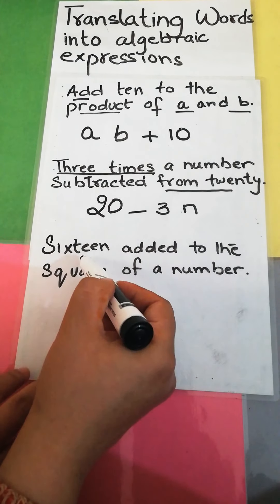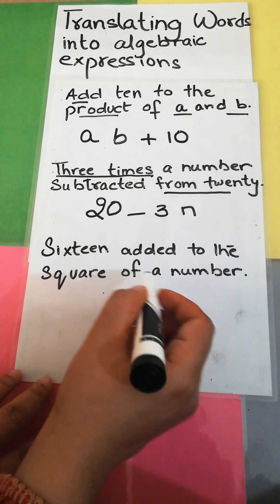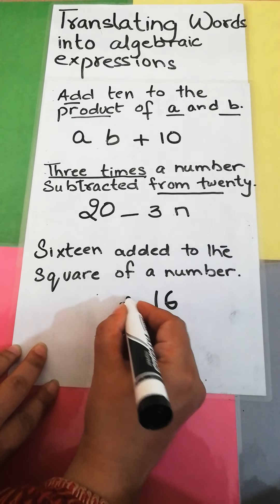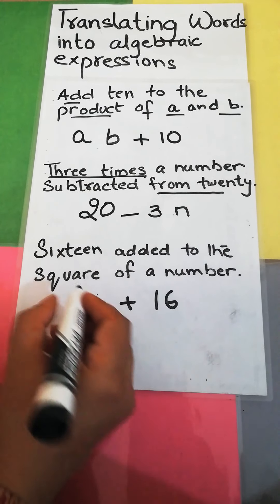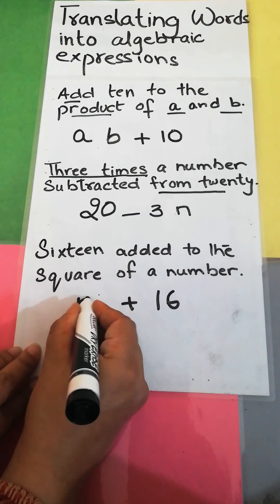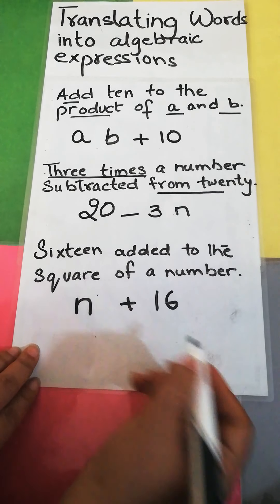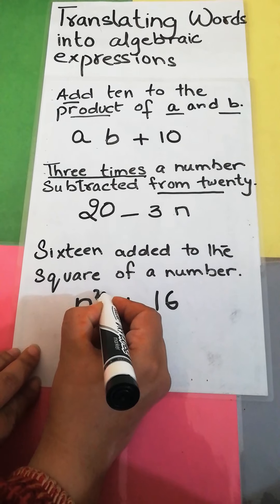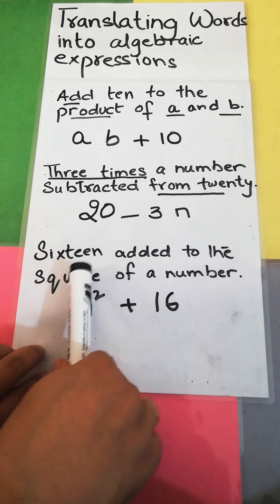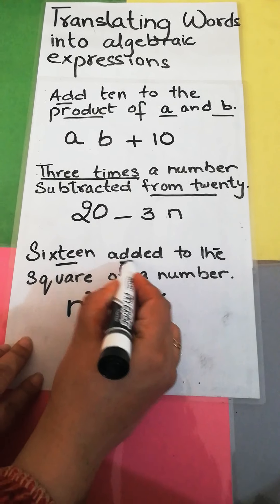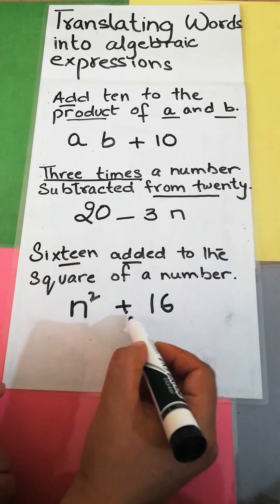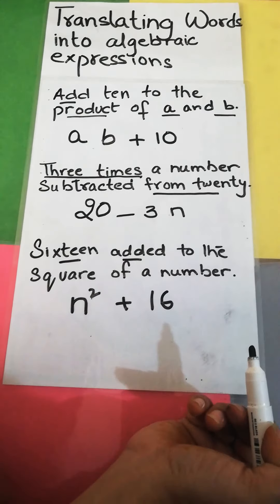Sixteen added to the square of a number. Sixteen is added to the square of a number — I am using n throughout. The square of a number means n², so sixteen added to the square of a number gives us n² + 16. Hope you understand this.